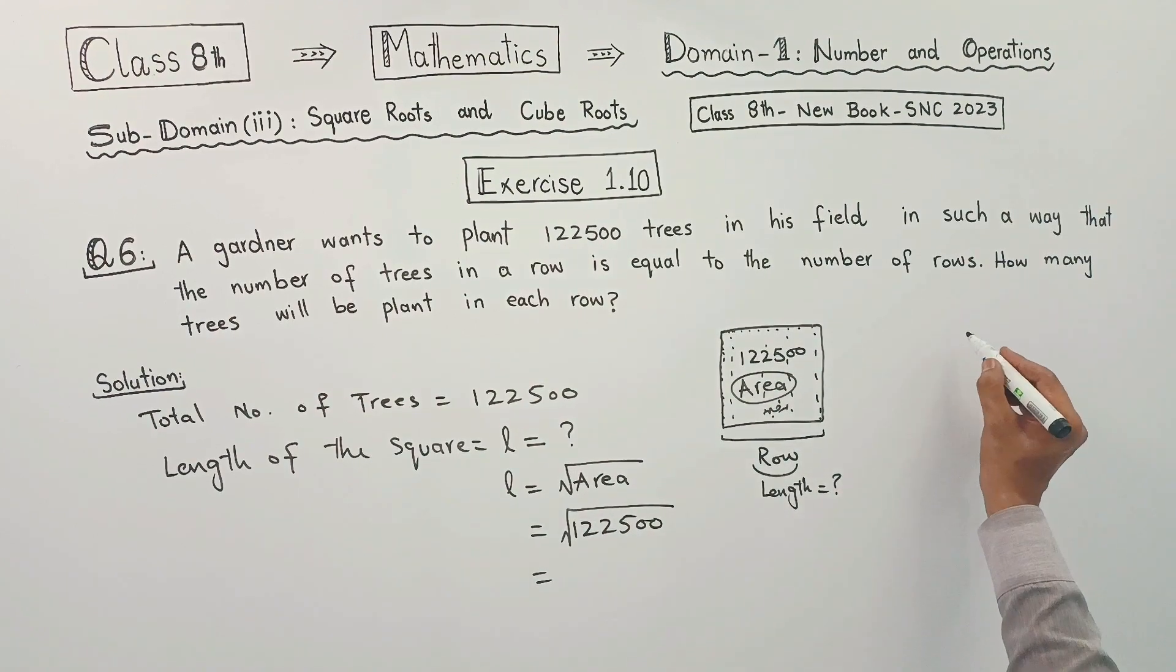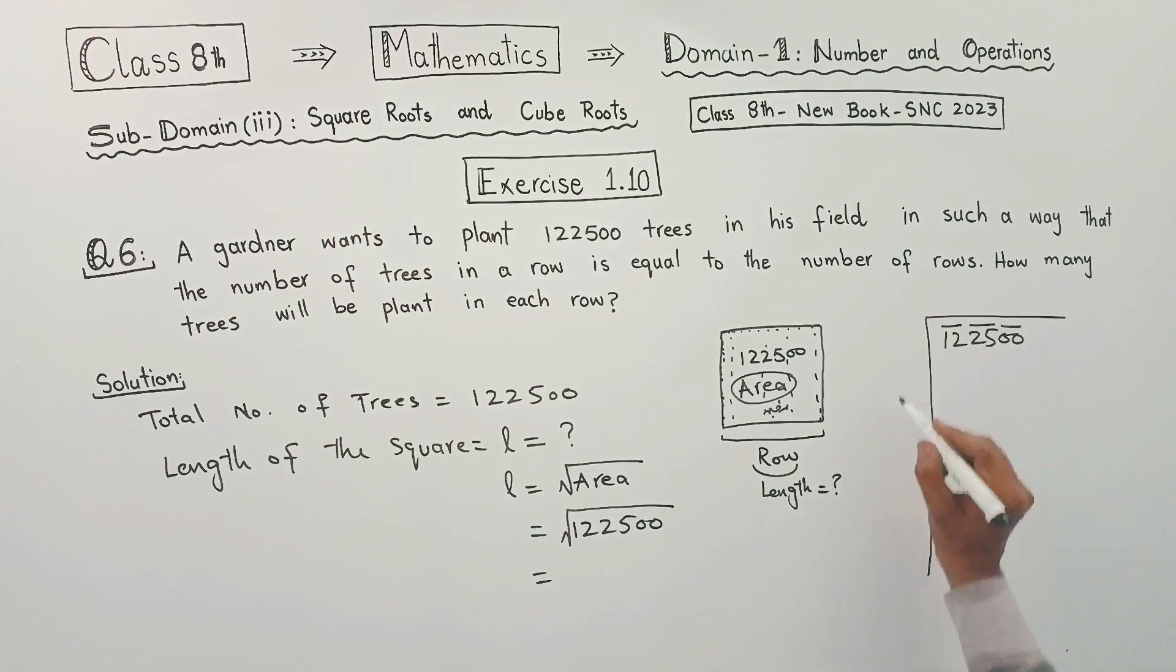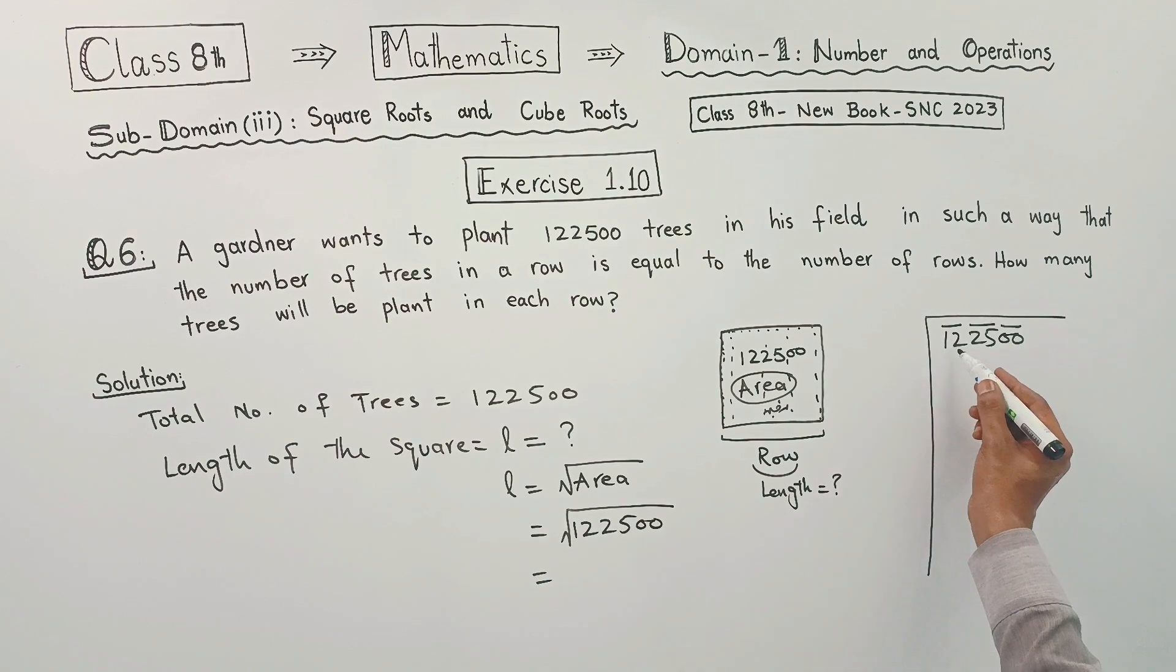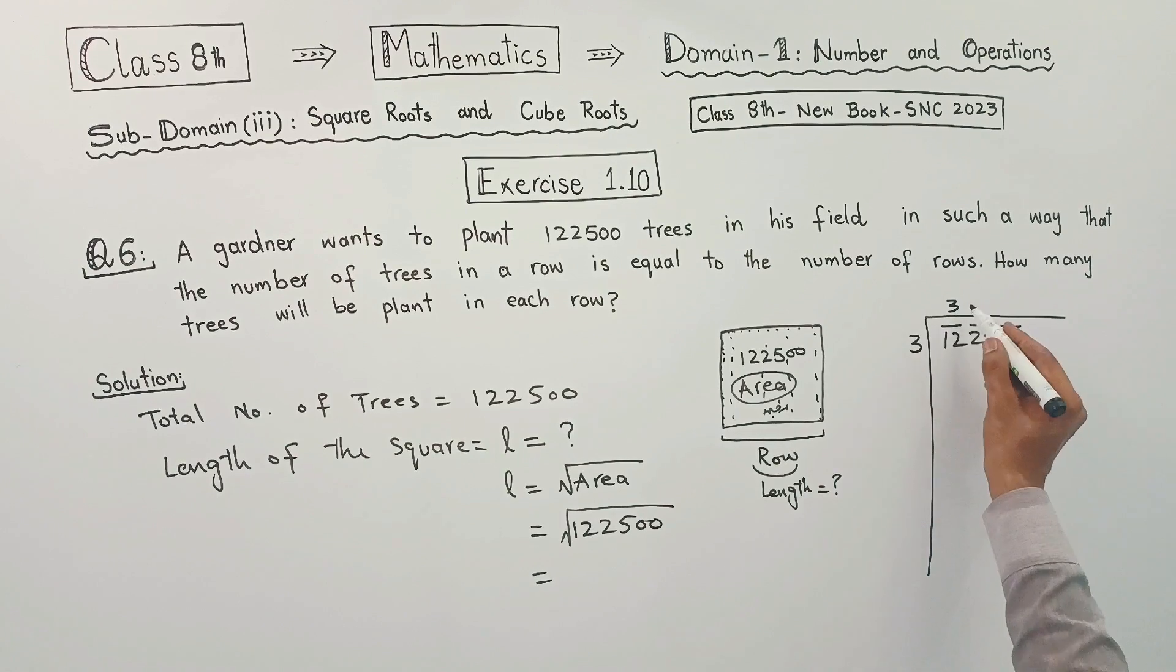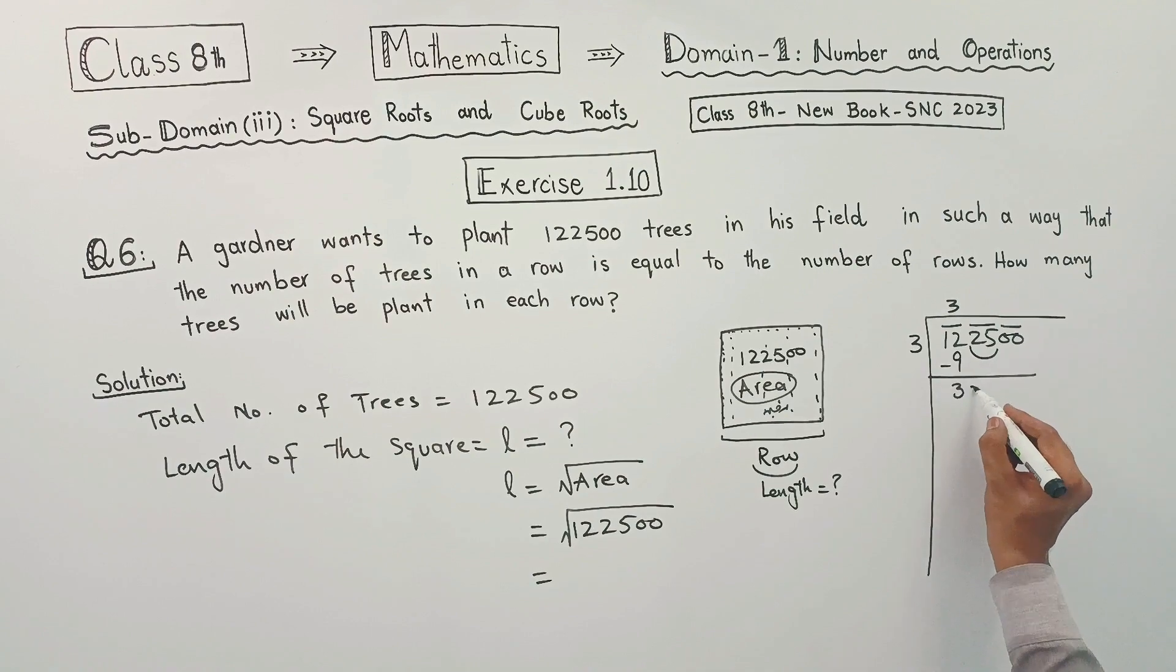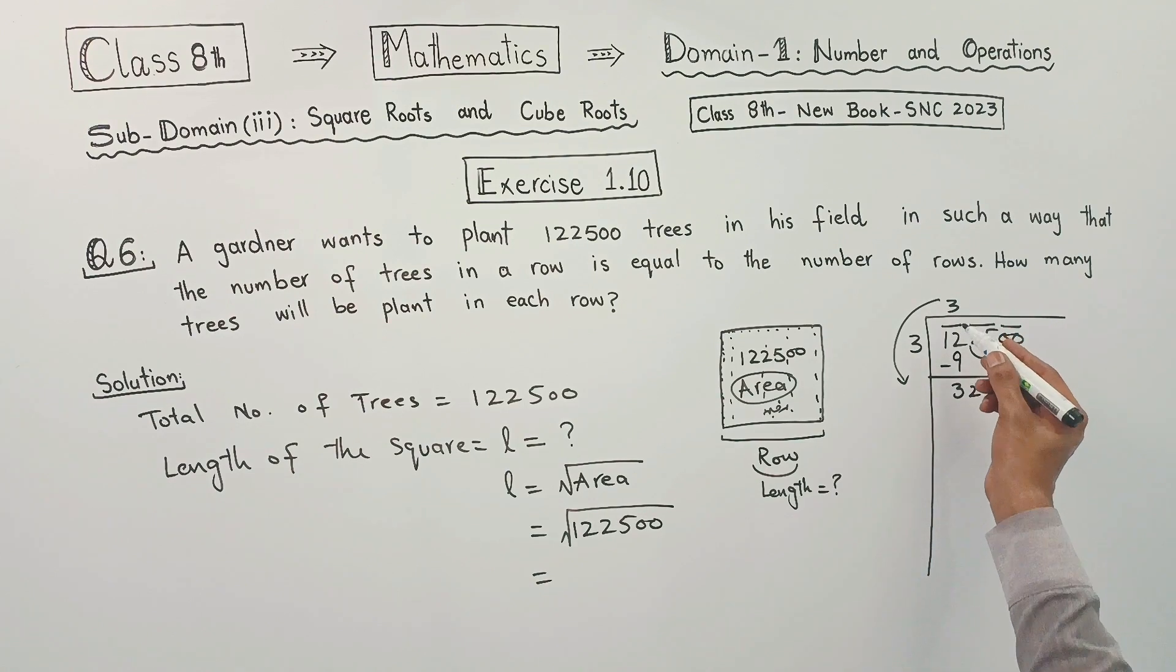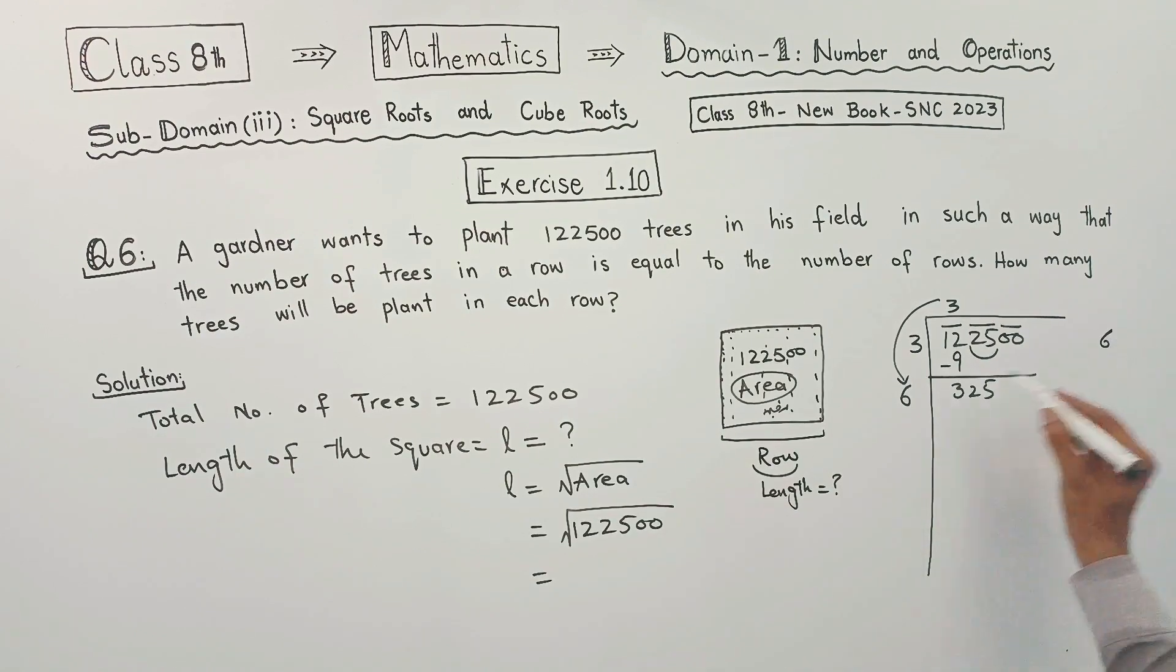Using the square root division method for 1,22,500. Here, like in previous questions, this is 12. Divide by 4, 4 times 4 is 16, but it's 9, minus 3 remaining. 25, then 3 plus 2 is 6.